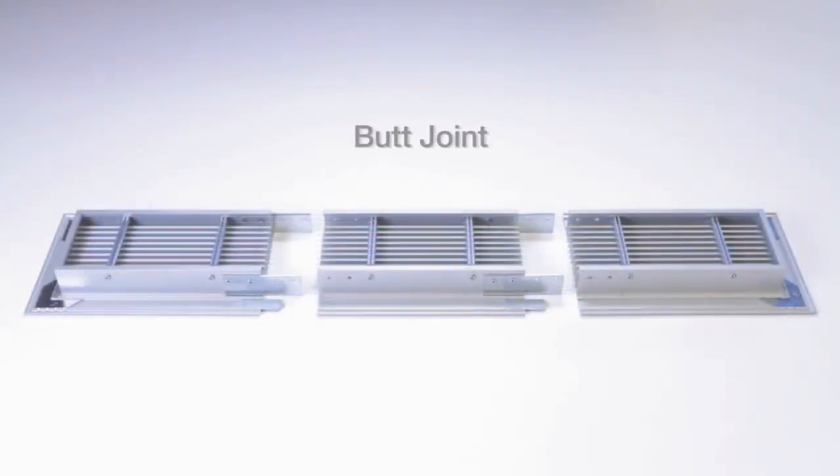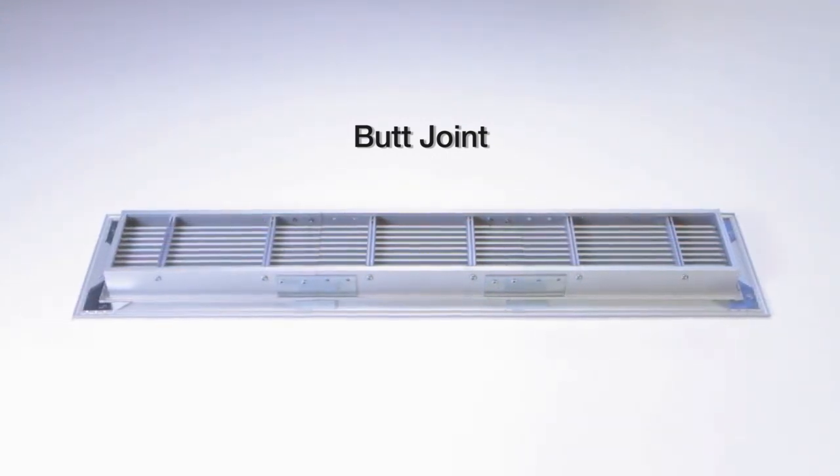The purpose of a butt joint is to allow several separate sections of a product to look like they are one continuous length.